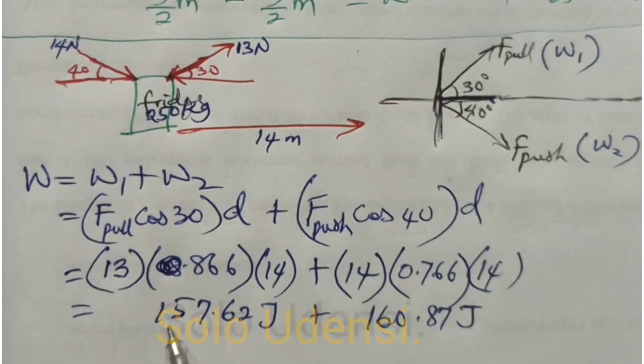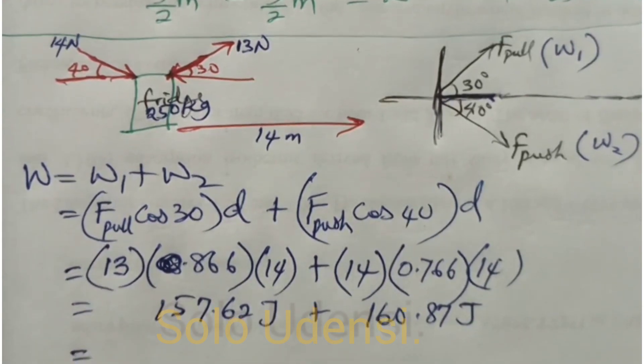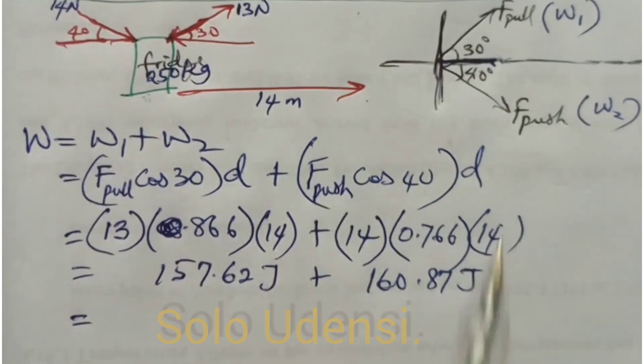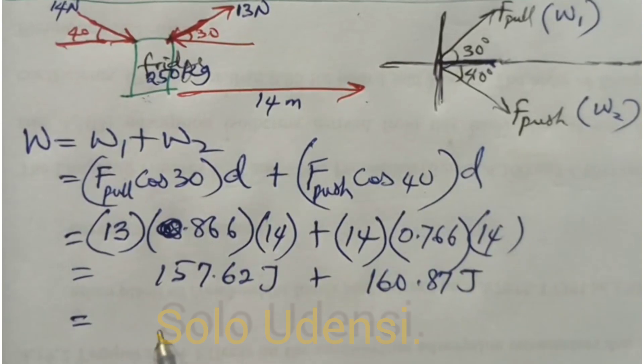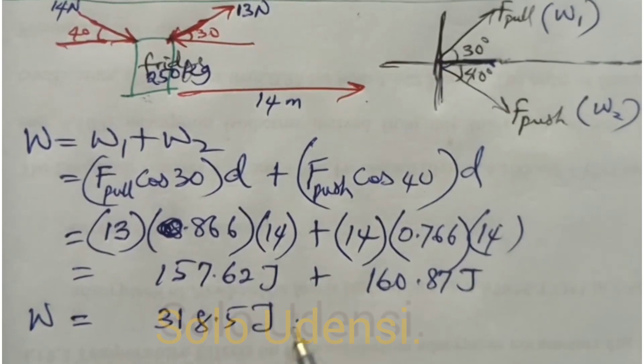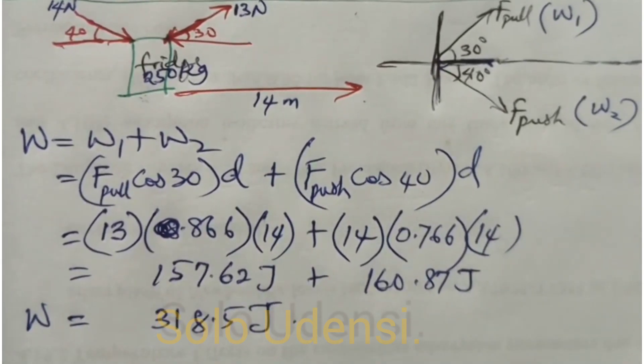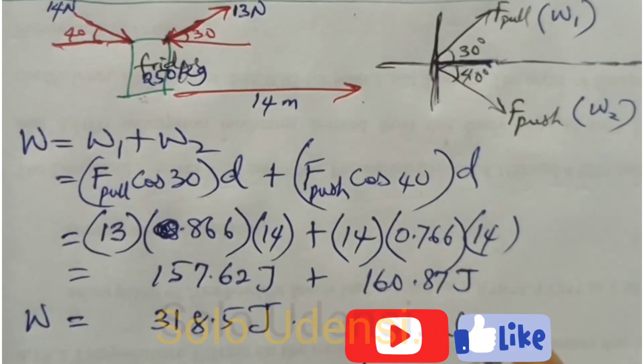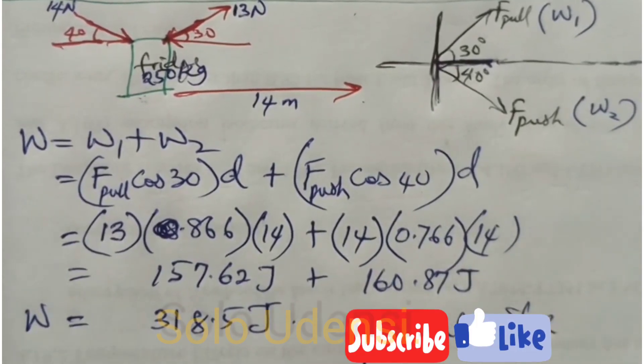So the person pushing is transferring this energy to the fridge while this person is transferring this energy to the fridge. So the total energy transfer to the fridge in order to move it 14 meters. So that's exactly how to do it. Please subscribe and click on the notification button so that whenever we post new videos you see it, bye.